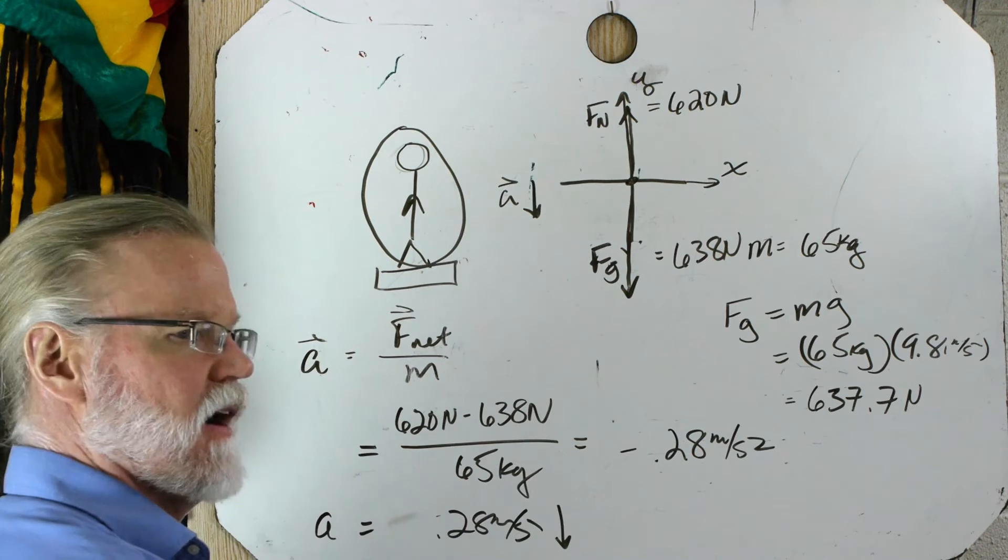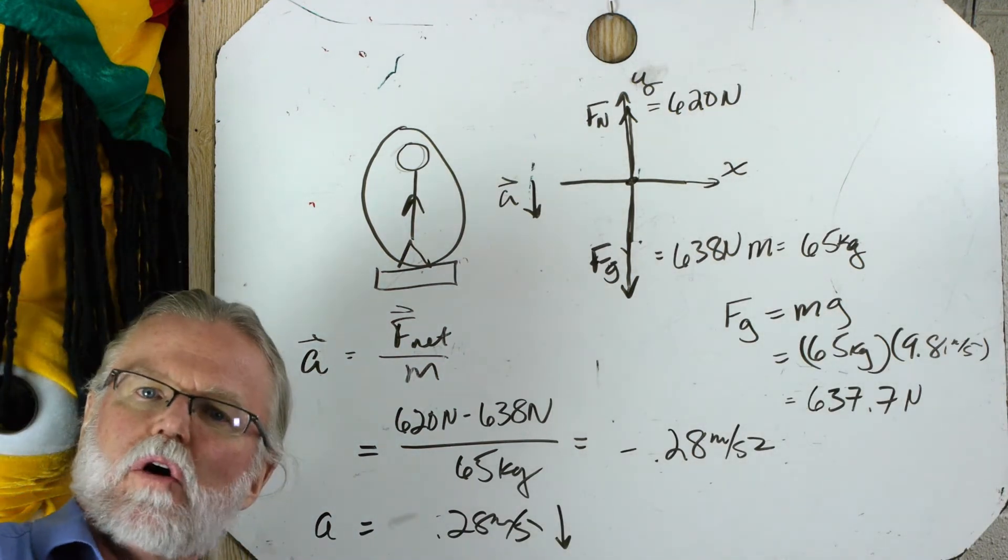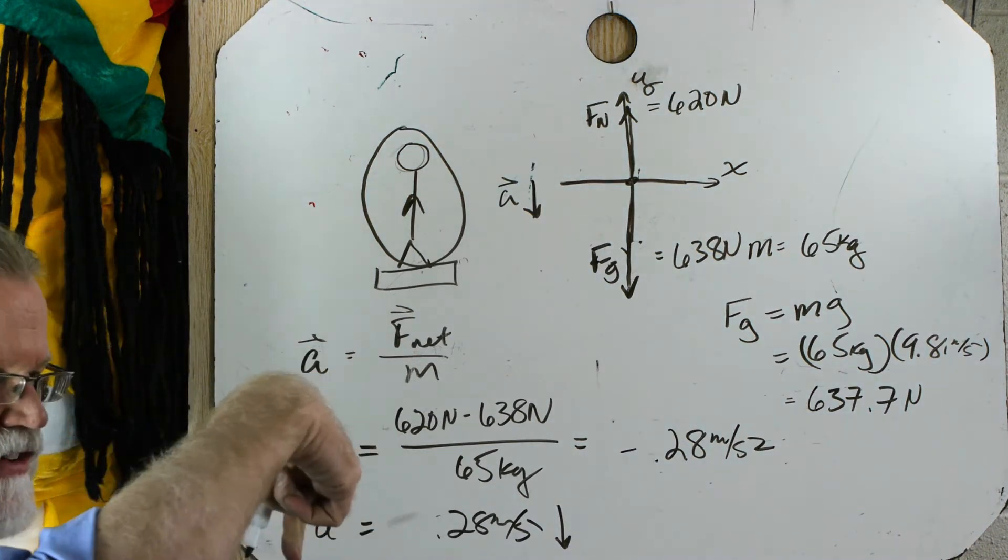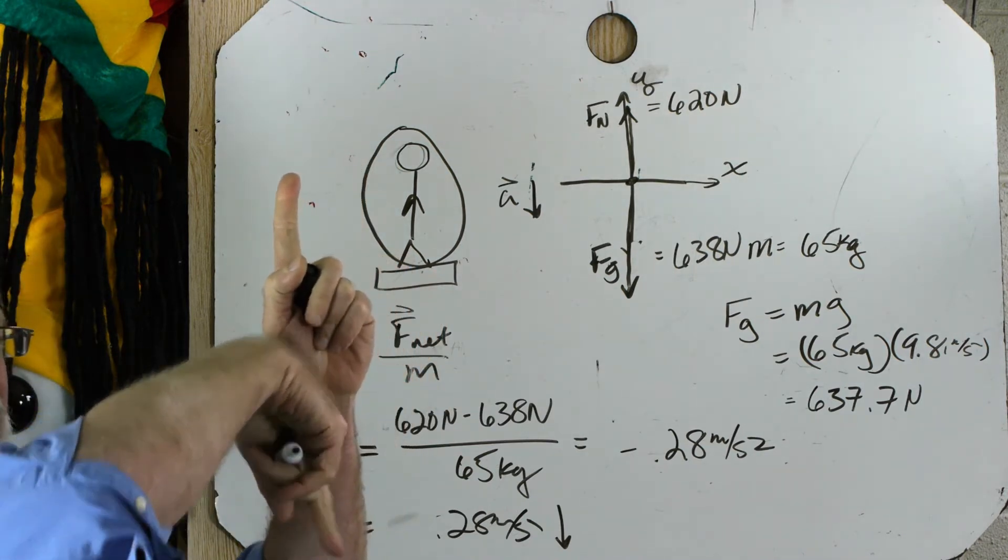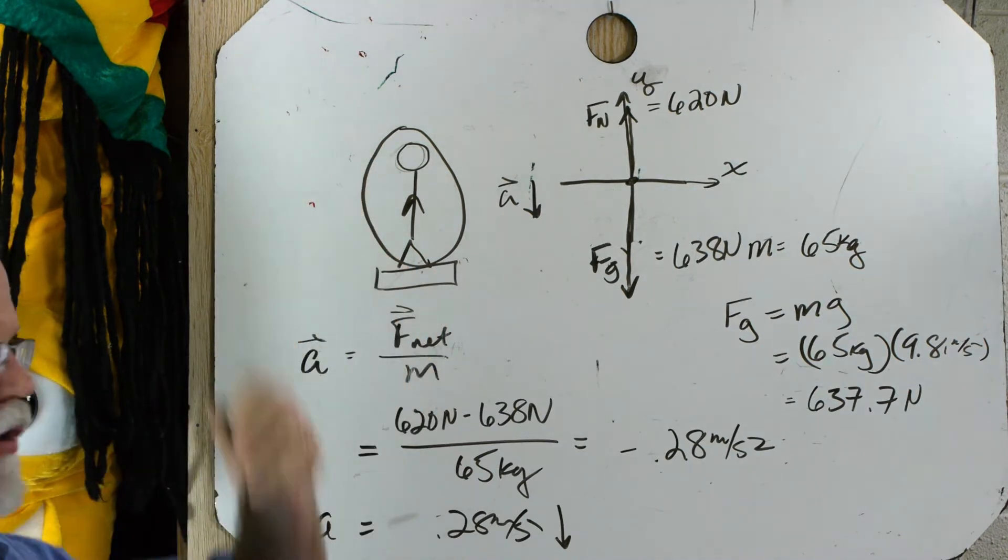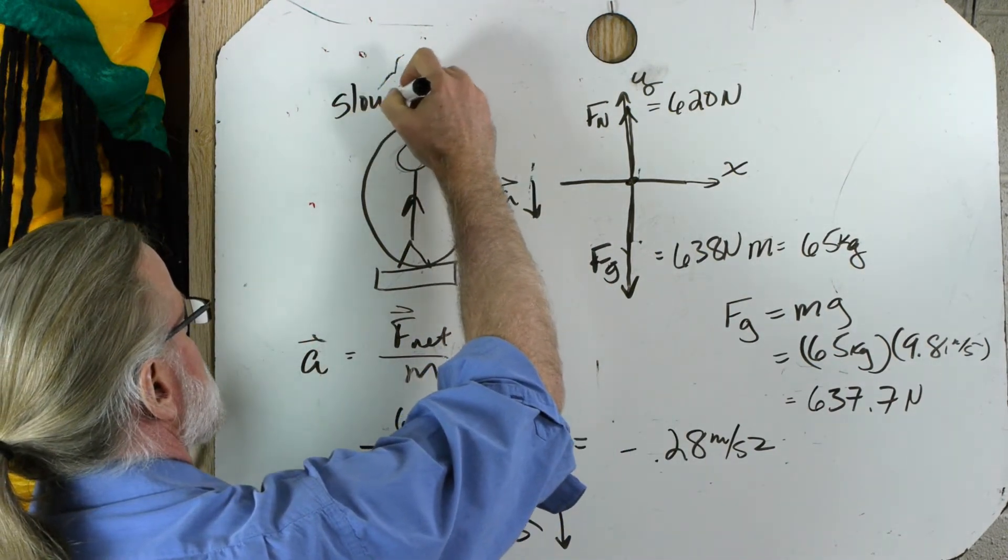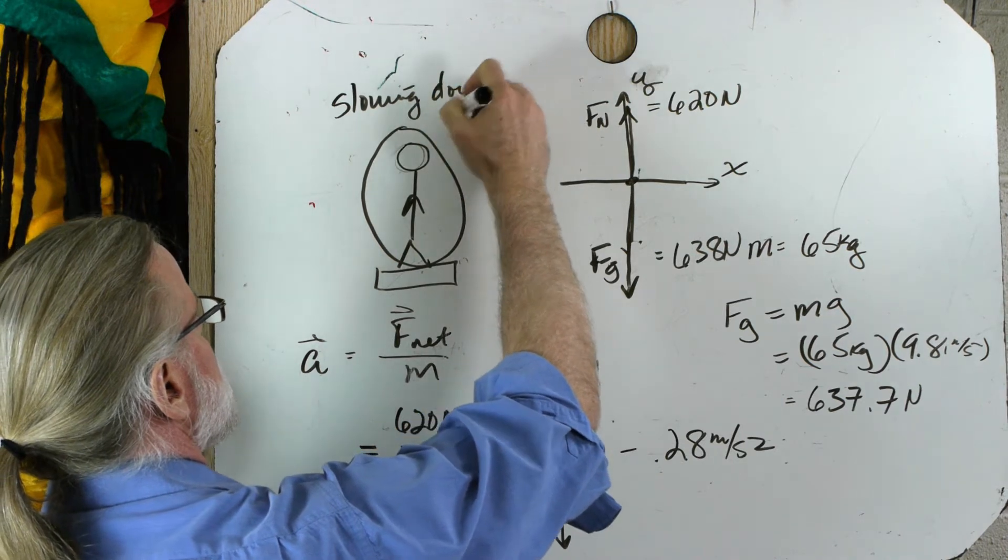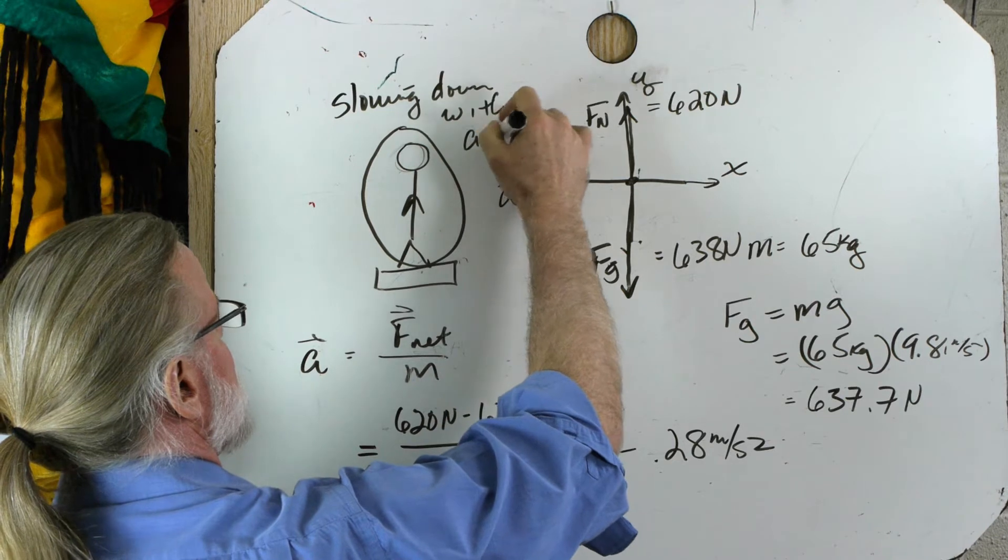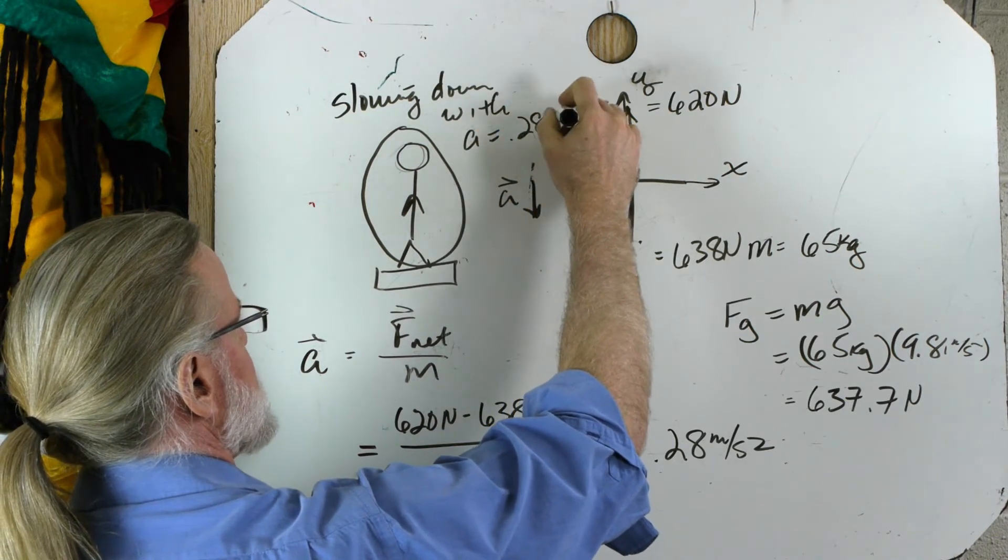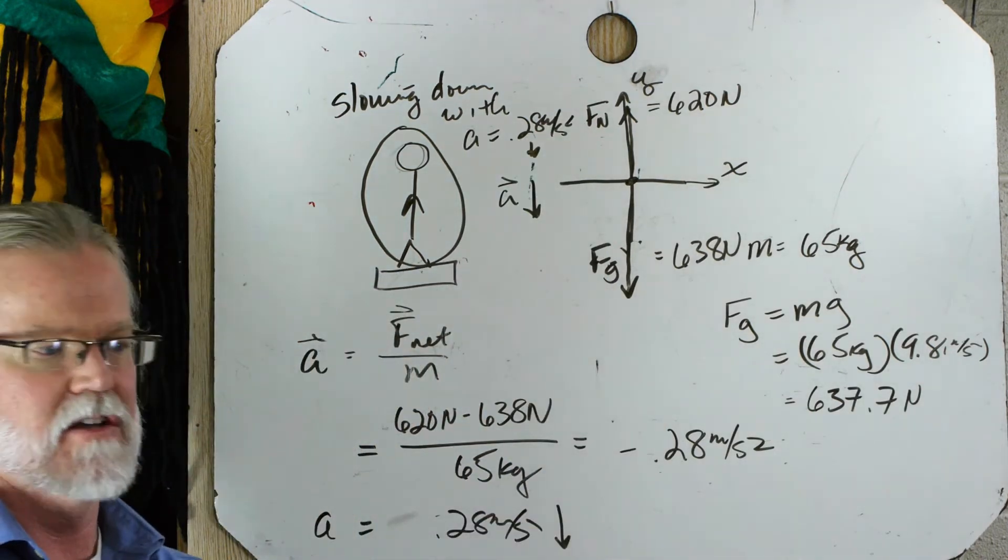So what's happening? Well, he started at the bottom floor in the lockup, and he's going up to the courtroom. If he has a negative acceleration, he must be slowing down. If he has an upward velocity, negative acceleration, he's slowing down. He must be approaching the top floors. So he is slowing down with an acceleration of 0.28 meters per second squared downward. Justin Bieber problem.